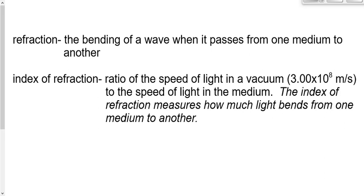Yesterday, we defined refraction as the bending of a wave when it passes from one medium or one material to another. We know that refraction takes place because the speed of the wave changes when it goes from one material to the other. The speed either increases or decreases — so V goes up or down — and as a result of that, theta, or the angle, will go up or down.